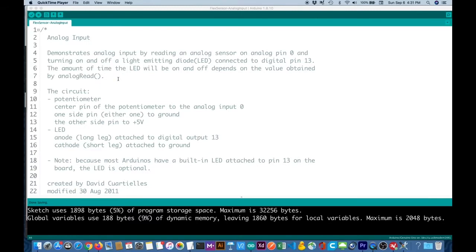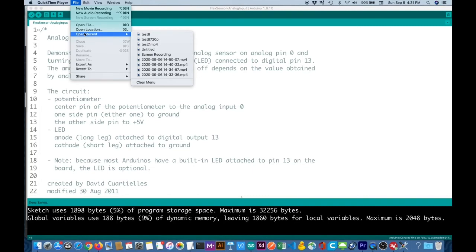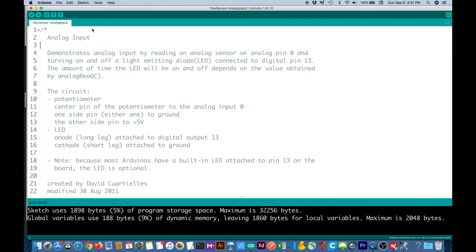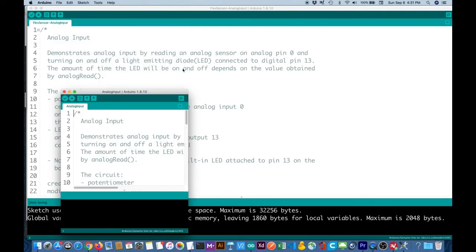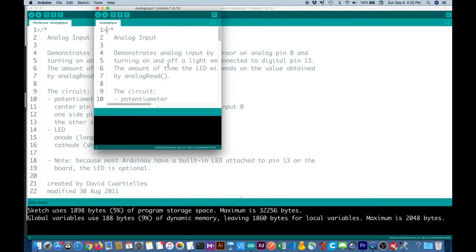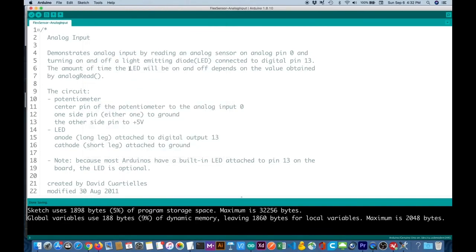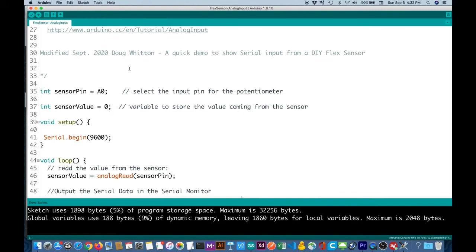Here's the Arduino code. I adapted it from one of the examples. Analog input. So you can see in the source code, I just made a few modifications. But all it's going to do is take the input from the flex sensor.